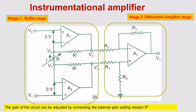Now we will come to the very important part — the circuit. Here you can see there are two stages: one is a buffer stage and another is a differential amplifier stage. Starting with the basic concept: here we have three op-amps — A1, A2, and A3 — all working in ideal conditions.